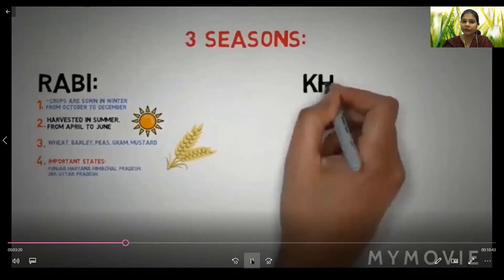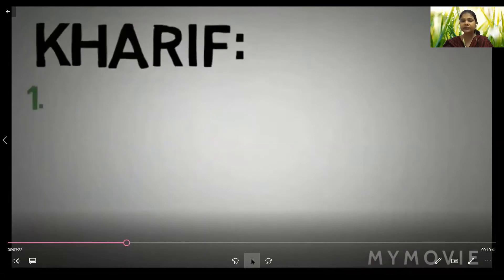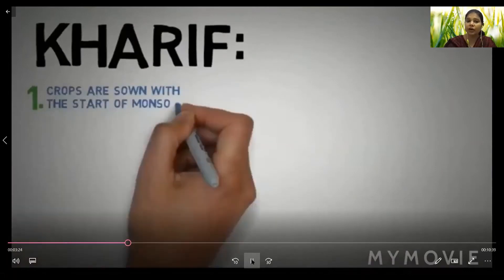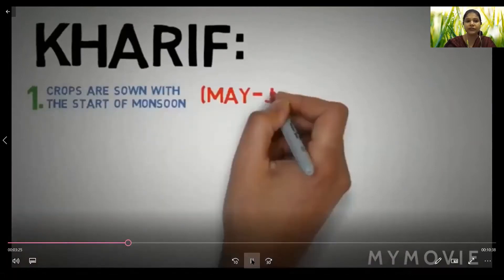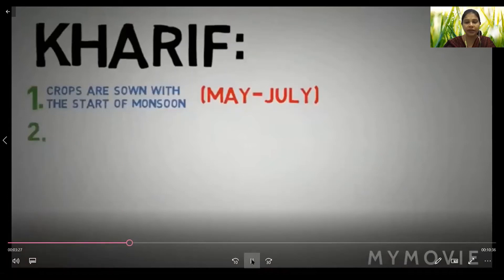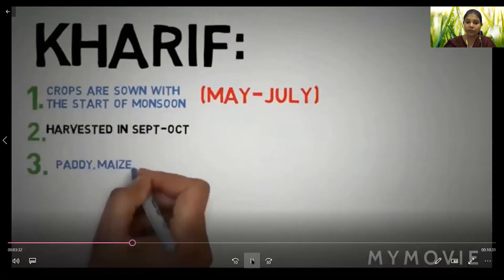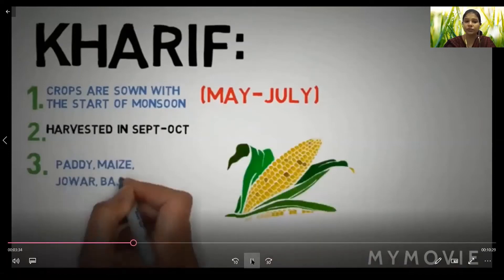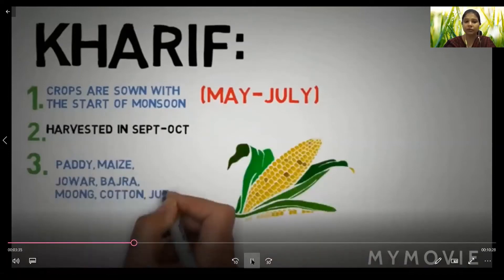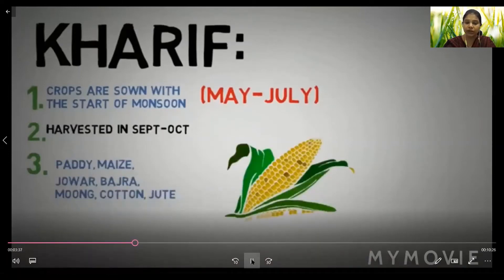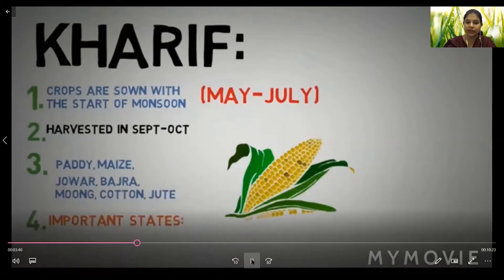The second season is Kharif. Crops are sown with the start of monsoon from May to July and harvested in September to October. Crops like paddy, maize, jowar, bajra, moong, cotton, and jute are examples. Important states include West Bengal, Assam, Maharashtra, Uttar Pradesh, and Bihar.